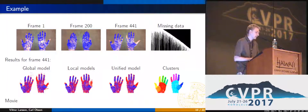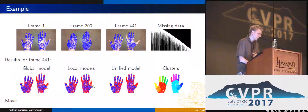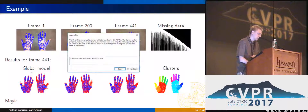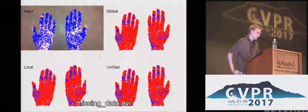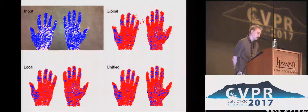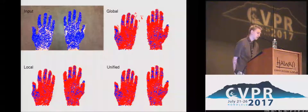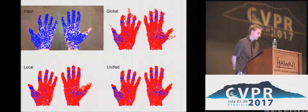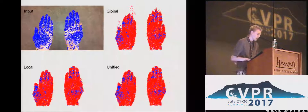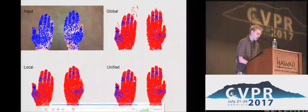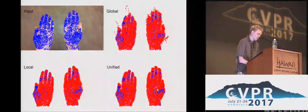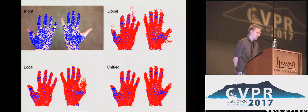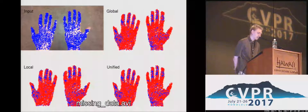Here is a small example highlighting the benefits of these additional constraints when recovering missing entries. We have a short sequence of two hands flexing where we have tracked some points, and we have partitioned the trajectories into the different parts of the hand. The blue points are observed in the current frame and red points are recovered using the rank constraints. In the top right, fitting a single low-rank matrix causes some trajectories to be under-constrained and fly around. In the lower left, fitting low-rank matrices independently to each cluster causes reconstruction quality to deteriorate greatly when the right thumb has fewer observations. With both types of constraints in the lower right, we get a much nicer reconstruction.